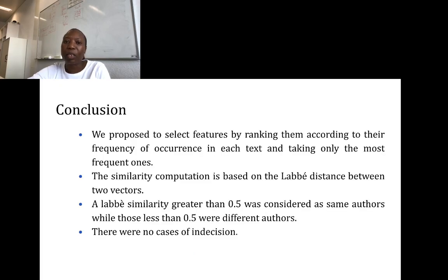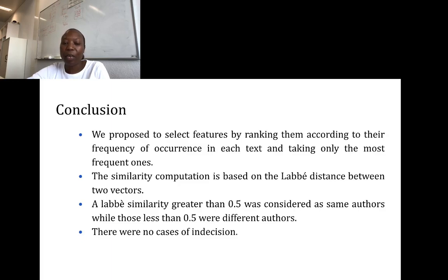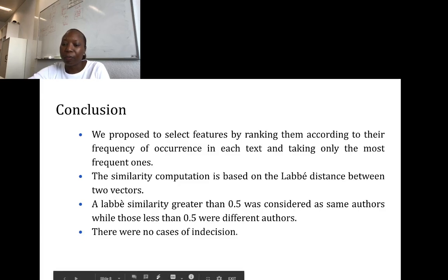In conclusion, we propose to select features according to their relative frequencies of occurrence in each text. The similarity between the writing styles is obtained by computing the Labbé distance with the top k features. A similarity threshold of 0.5 is used to arrive at a decision, and no cases of indecision were considered. Thank you.